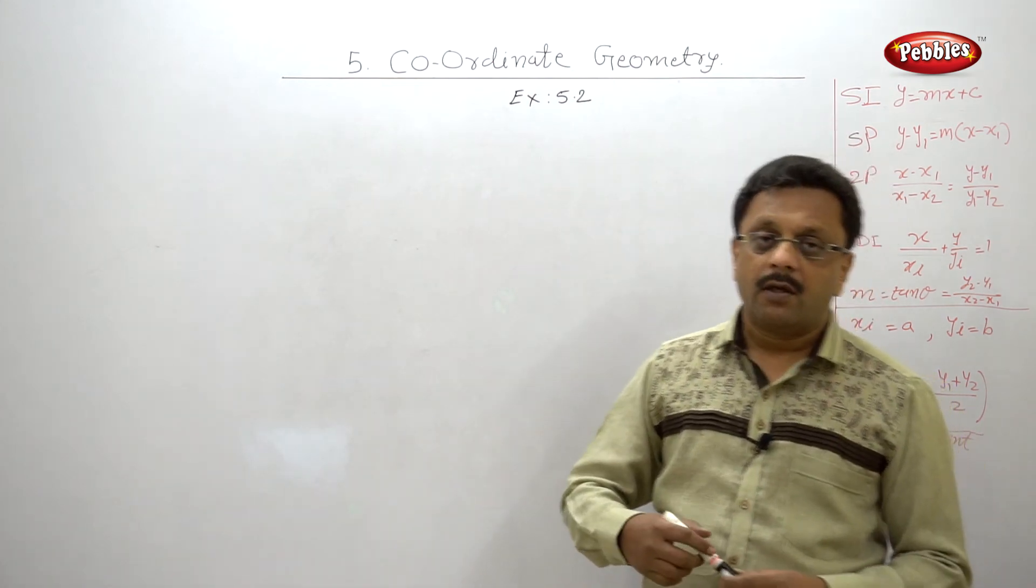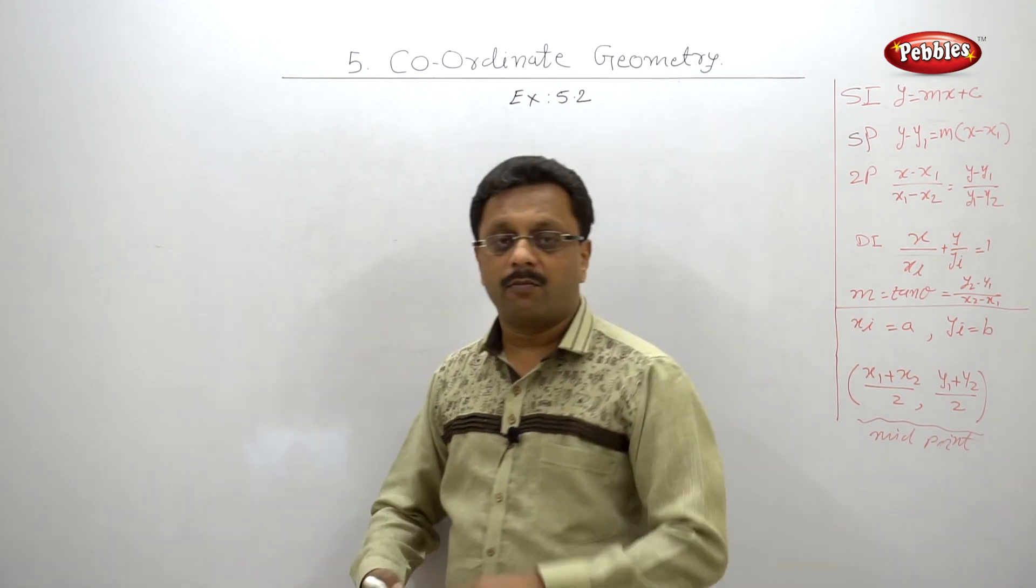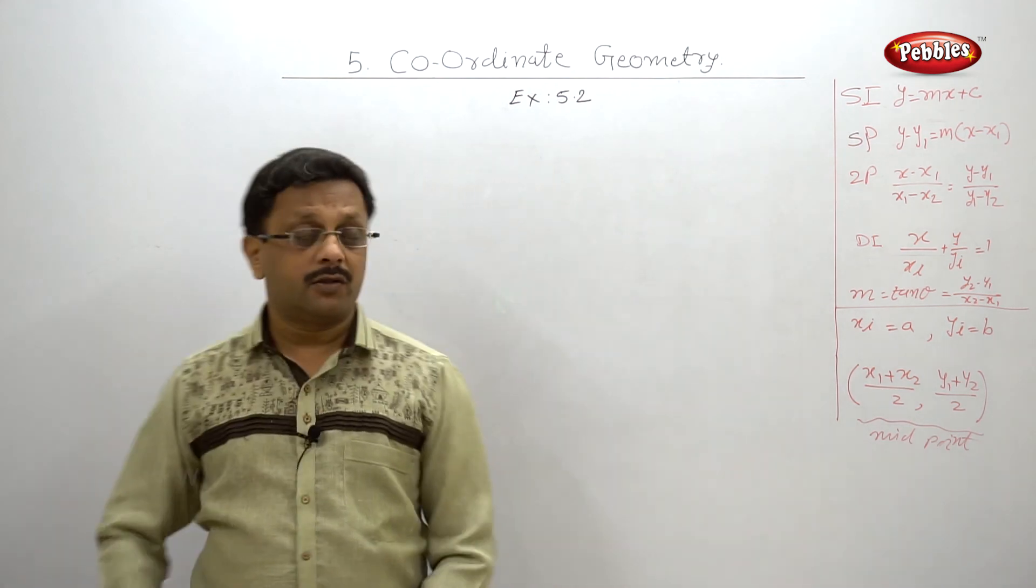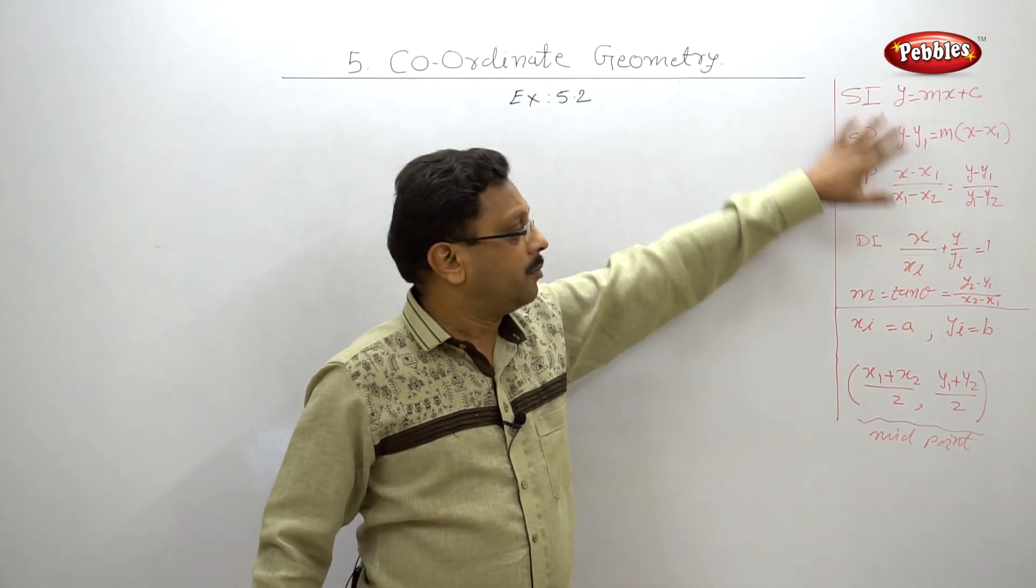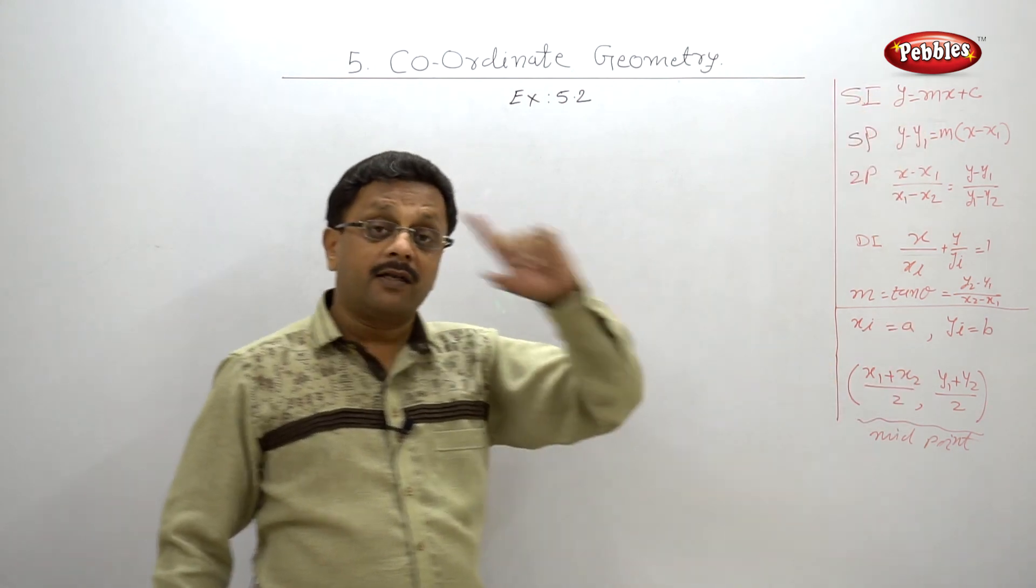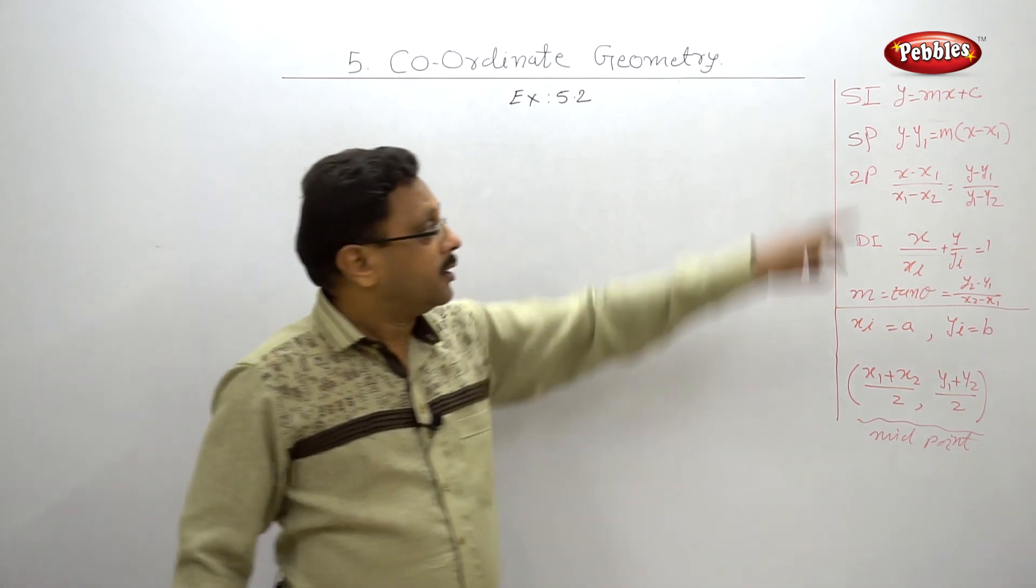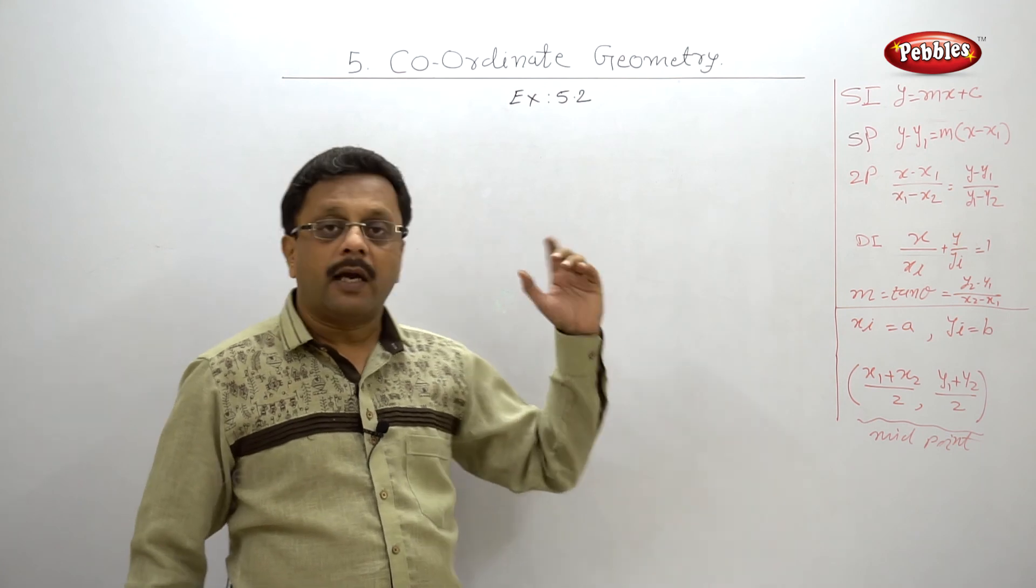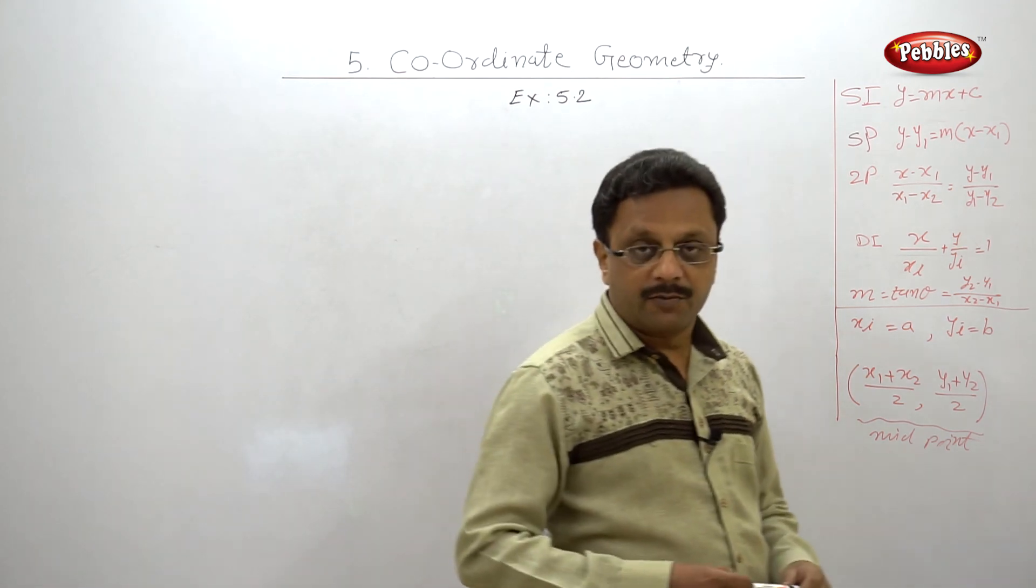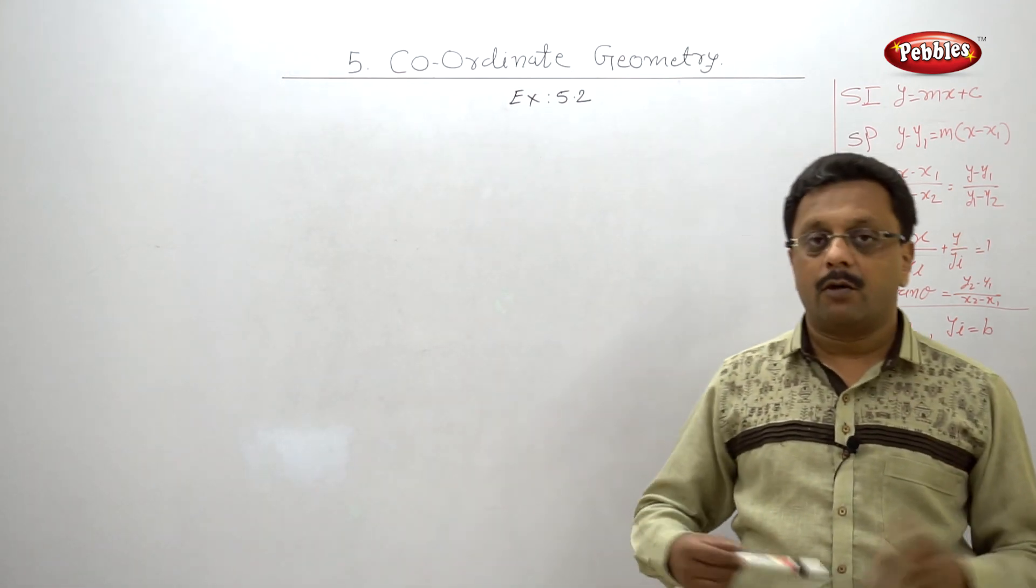Sometimes you may be given equation in some different form and you have to rewrite the equation in the slope-intercept form. So, don't just memorize the formulas but also the name of the form. That is the slope-intercept, then the slope-point, two points and intercept forms, double-intercept forms.